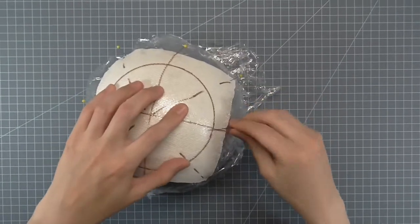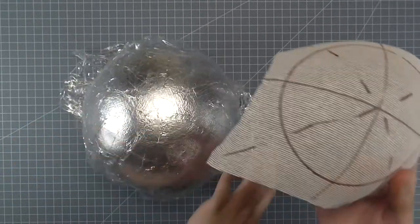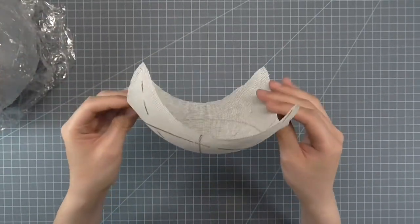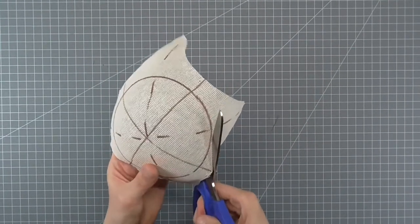Remove the pins and the Buckram from the Styrofoam ball. You can now cut out the circle.